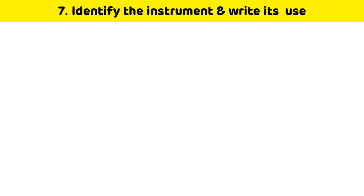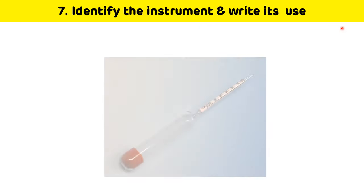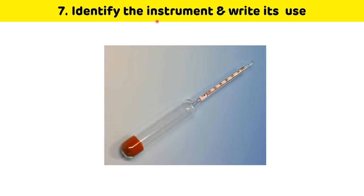Seventh question: identify the instrument and write its use. This is the picture of a urinometer, which is used to measure the specific gravity of urine.